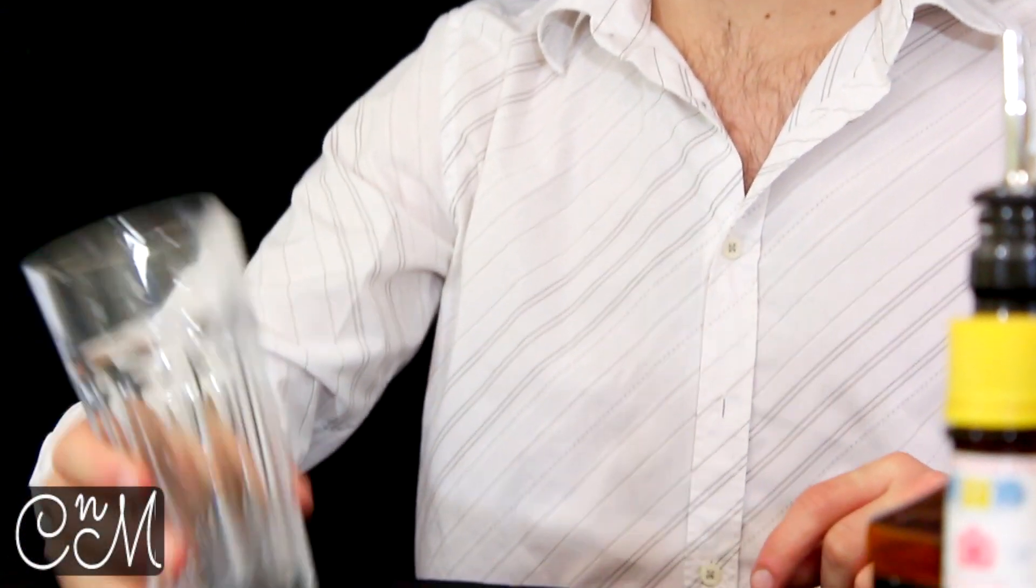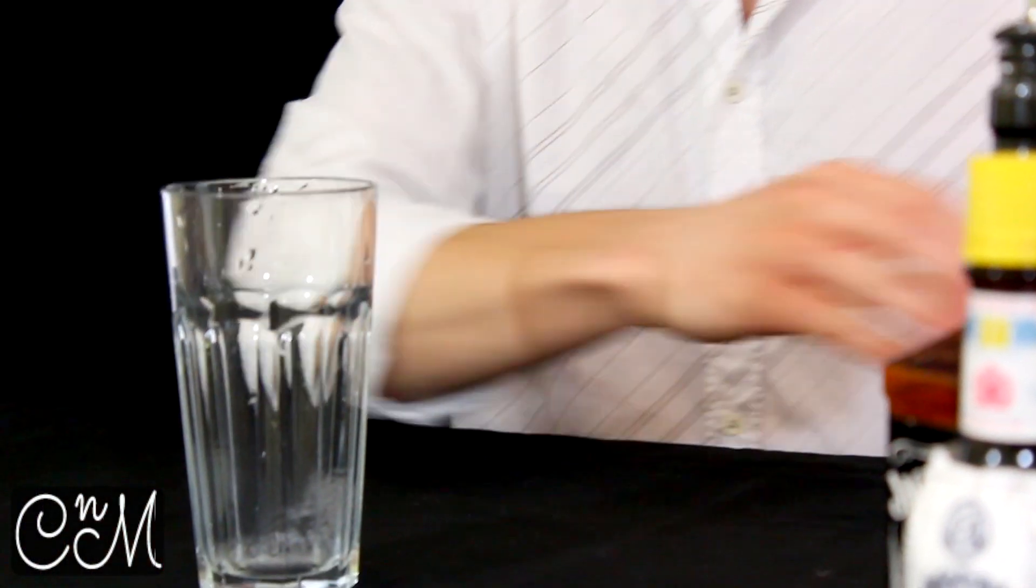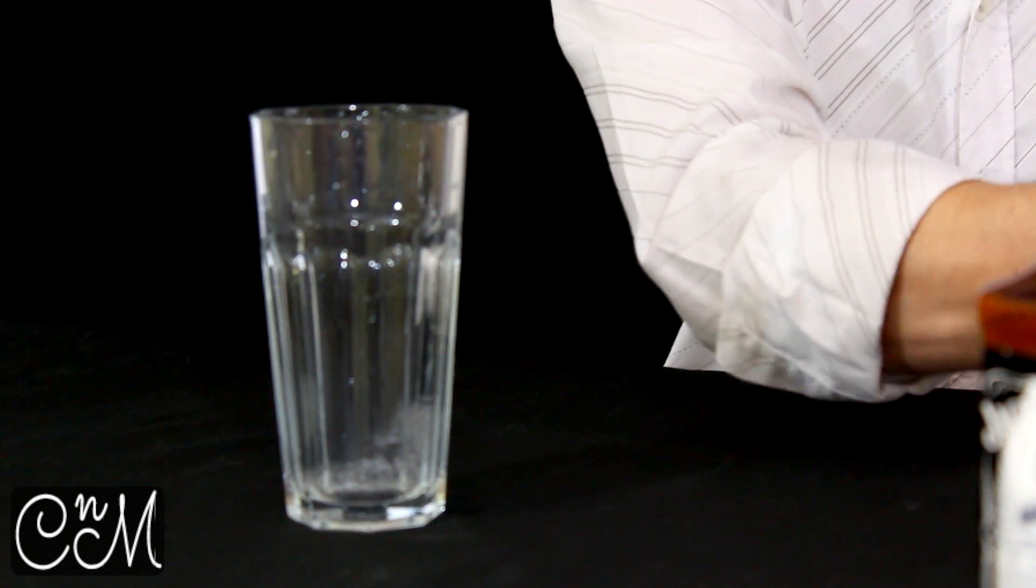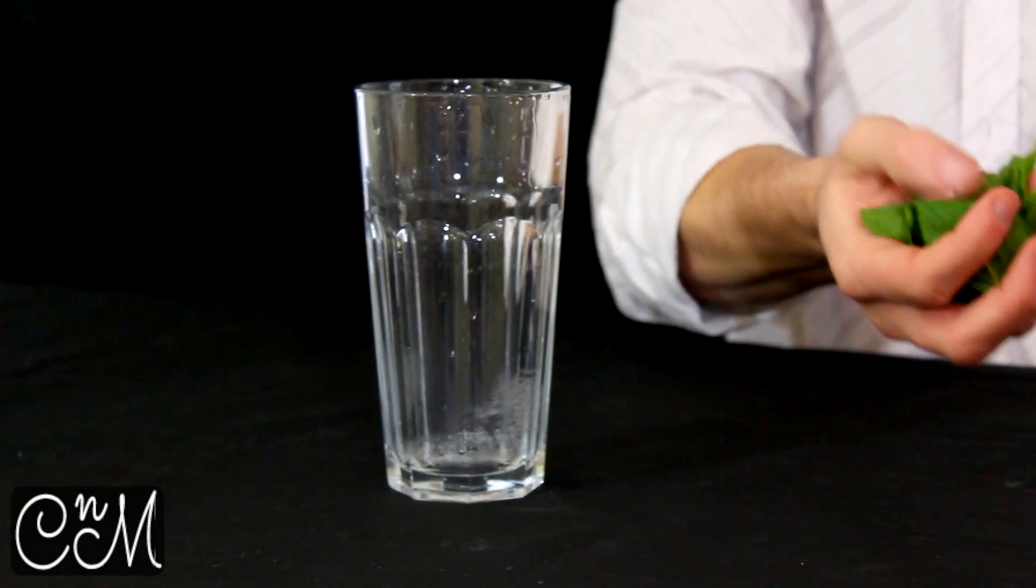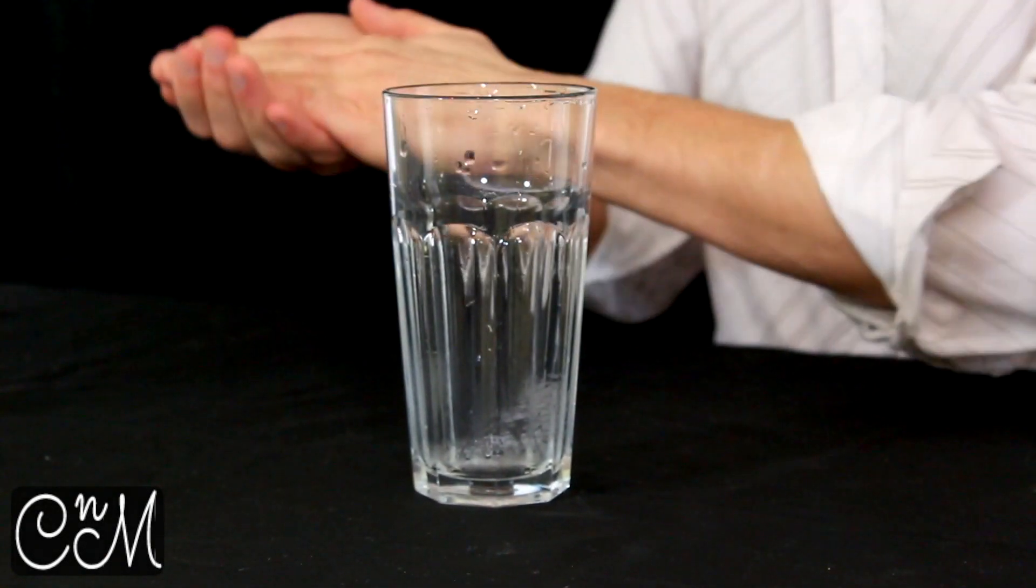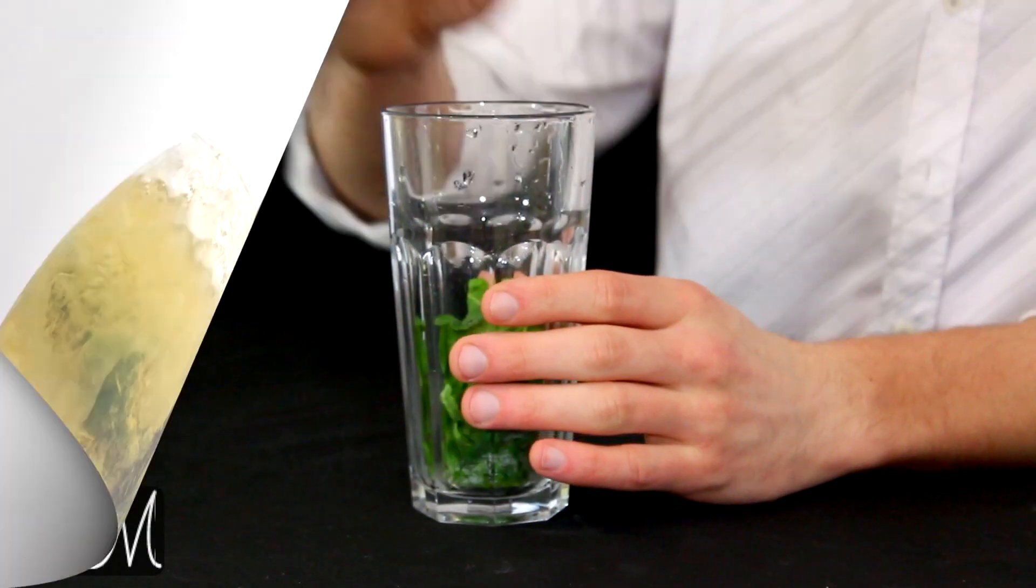First of all we need to get a Boston shaker glass and we're going to put in a handful of mint leaves at the bottom. Gently give them a clap just to help release the mint flavors.